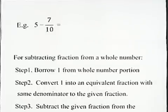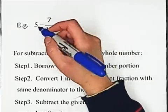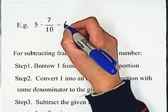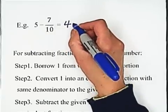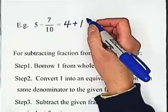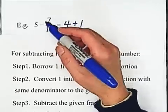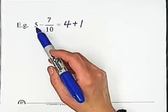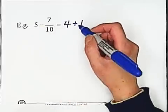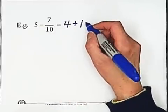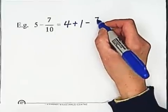Follow the rules. Borrow one from whole number portion. We can write 5 equals 4 plus 1. If you borrow one from whole number portion, 5 becomes 4. We still write the one here. So minus 7 over 10.